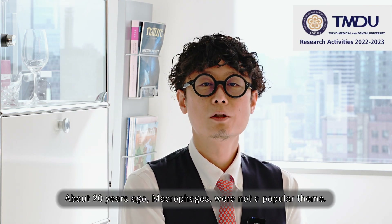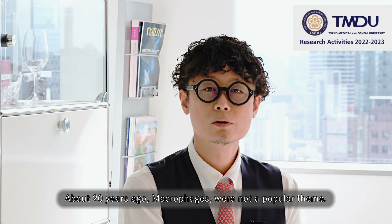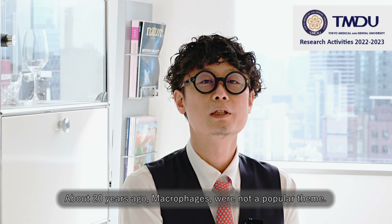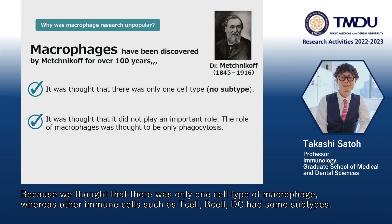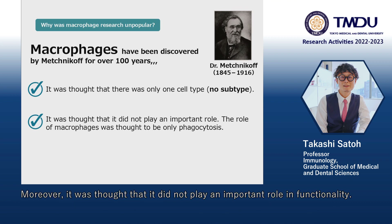About 20 years ago, macrophages were not a popular research area, because it was thought that there was only one cell type of macrophages, whereas other immune cells such as T cells, B cells, and dendritic cells had some subtypes. Moreover, it was thought that macrophages did not play an important role in functionality.